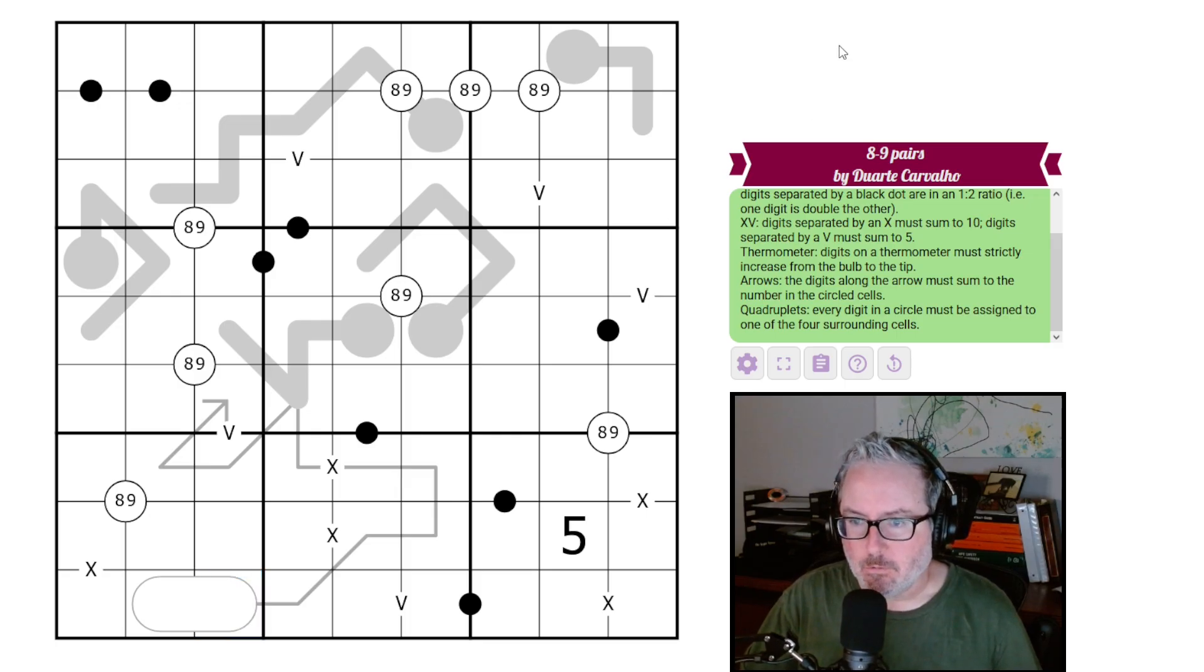And then we have quadruples. Every digit in a circle must be assigned to one of the four surrounding cells. So down here we have an eight, nine, meaning of these four cells, at least one of them will be an eight and at least one will be a nine. Now there is the possibility of repetition here. We'll just have to see what comes out of the puzzle.